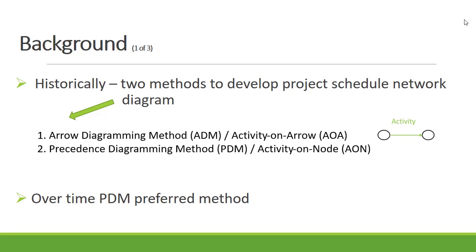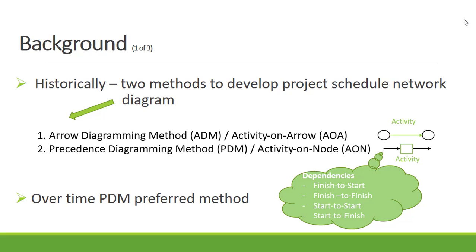For the activity on arrow, the activity is represented by an arrow, and the activities are then linked together with nodes. For the activity on node, the activity is represented by a rectangle or square box, and they are linked together with arrows. The arrows represent the different dependencies: finish to start, finish to finish, start to start, and start to finish. It is important to remember that for the activity on arrow, we only use the finish to start dependency.